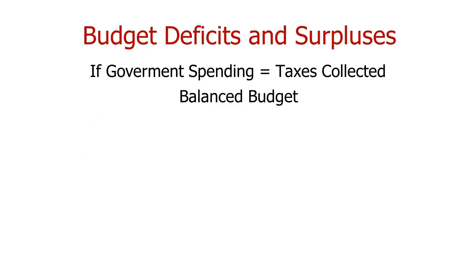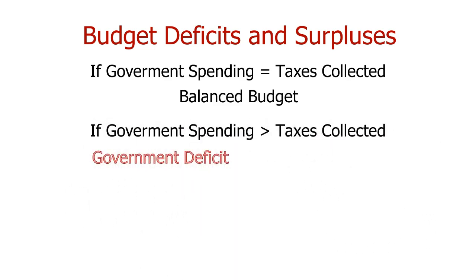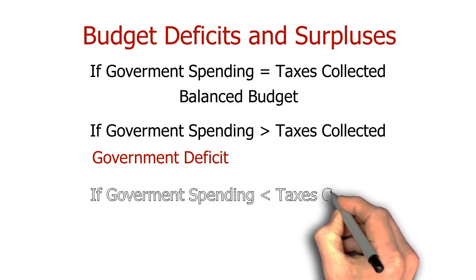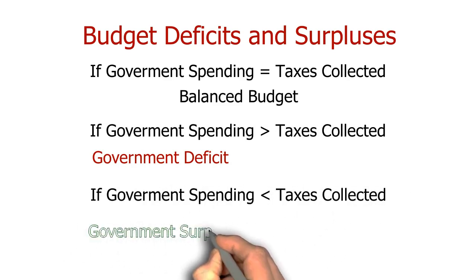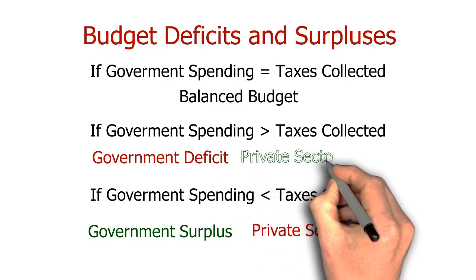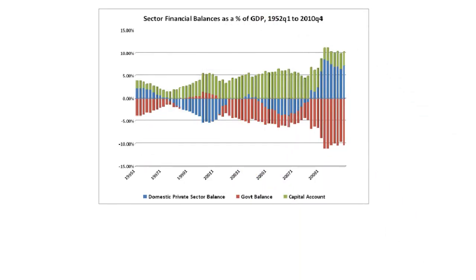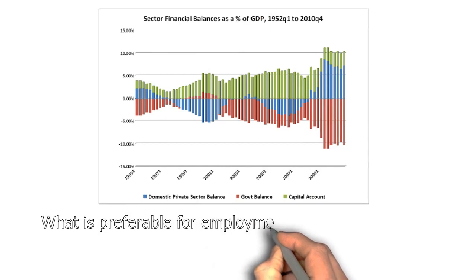If the government spends more than it collects in taxes, it is said to be running a deficit budget. And when it collects more in taxes than it spends, it is running a surplus budget. This means that when the government is running a surplus, the private sector is running a deficit. And conversely, when the government is running a deficit, the private sector is running a surplus. When viewed on a chart, this relationship appears like a mirror image.